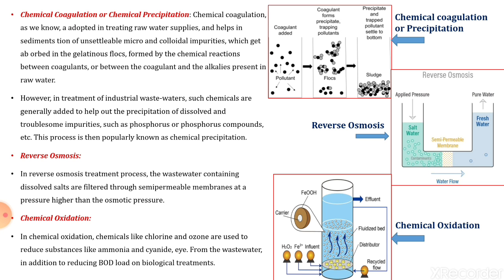In chemical oxidation, chemicals like chlorine and ozone are used to reduce substances like ammonia and cyanide from the wastewater, in addition to reducing the BOD load on biological treatment. The oxidizing chemicals such as chlorine and ozone reduce the concentration of substances like ammonia and cyanide.